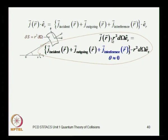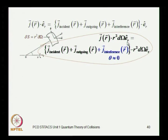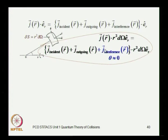If you take the flux — the scalar product of the probability current density vector with a radial elemental surface area δS = r² δΩ times the unit radial outward vector — this flux is the dot product of j with δS. But j itself is made up of three pieces: j incident, j outgoing, and the interference term, of which the interference term is important only in the forward scattering region, which is θ nearly equal to 0.